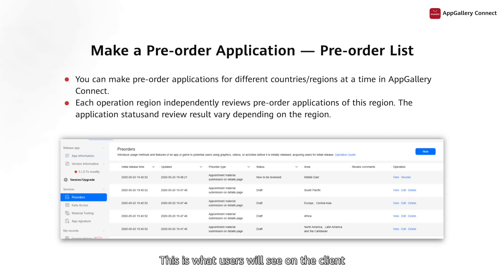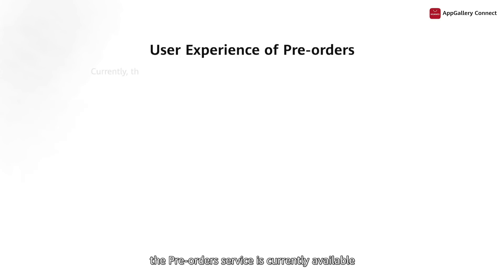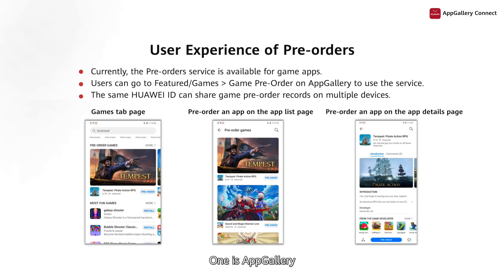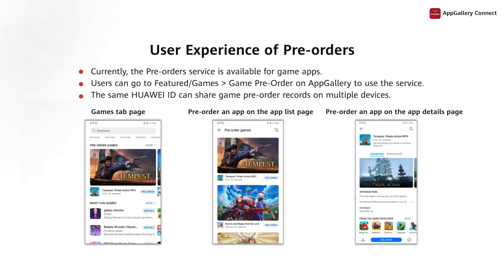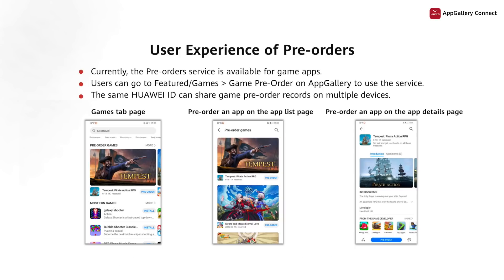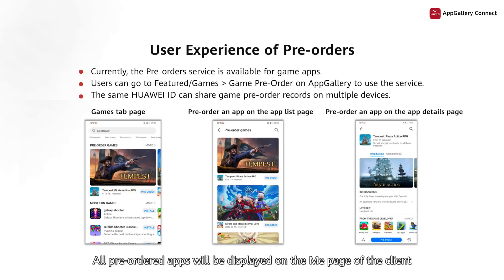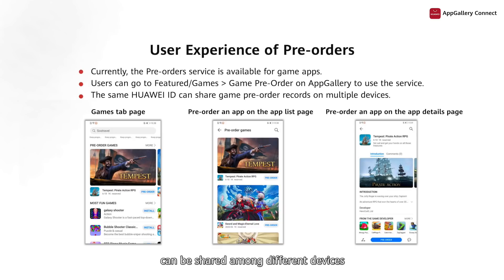This is what users will see on the client. The pre-orders service is currently available only for game apps. Users can experience this service on two clients: one is AppGallery, the other is GameCenter, and both are available on Huawei phones. Currently, GameCenter is not available outside the Chinese mainland. Users can tap the slot of the pre-orders service on the game or the recommendation tab to view apps available for pre-order, and then tap the pre-order button next to an app to pre-order it. All pre-ordered apps will be displayed on the Me page of the client. Currently, pre-orders under the same Huawei ID can be shared among different devices.